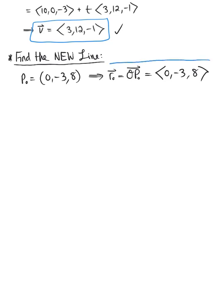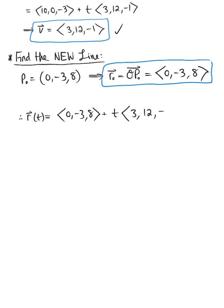We'll use our position vector with the parallel vector to define the new line. Therefore, r(t) = (0, -3, 8) + t·(3, 12, -1). Simplifying, we get the components: 0 + 3t, -3 + 12t, and 8 - t. This is the equation of the new line.